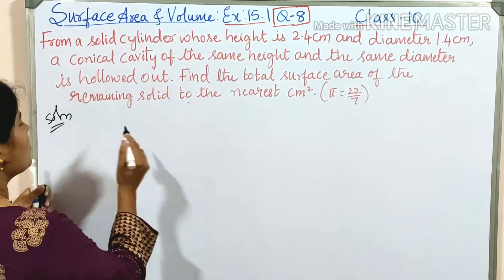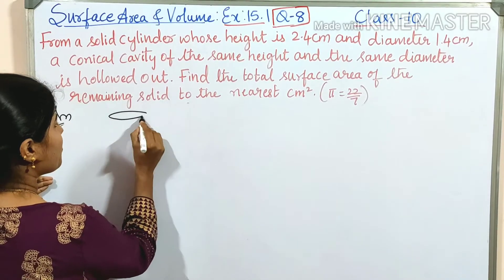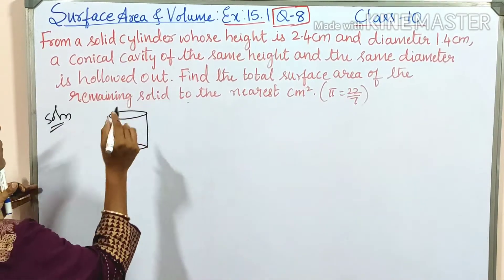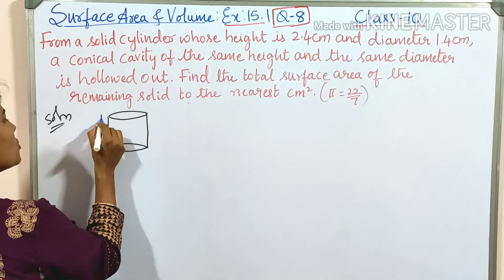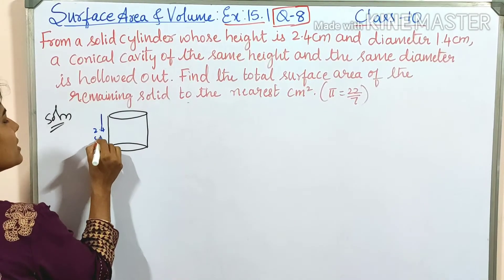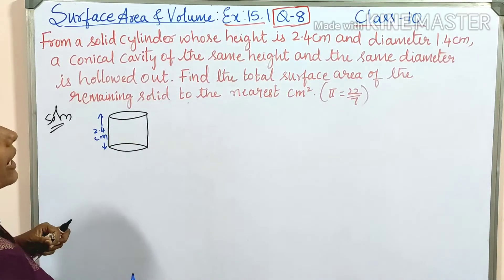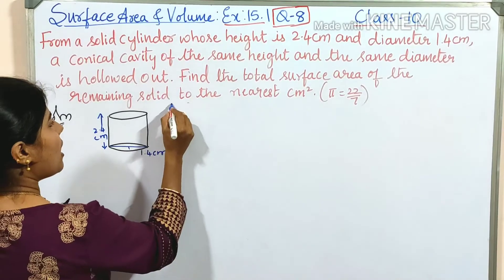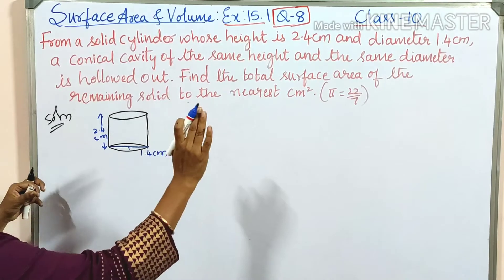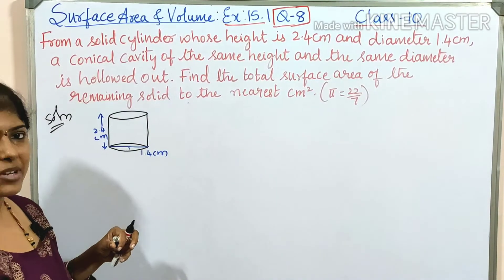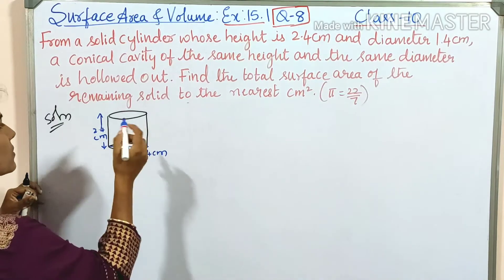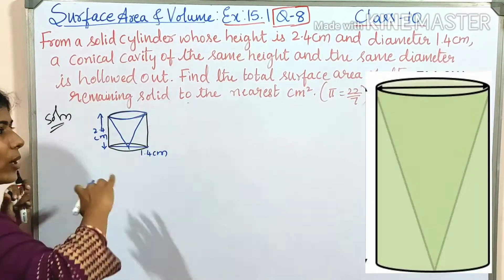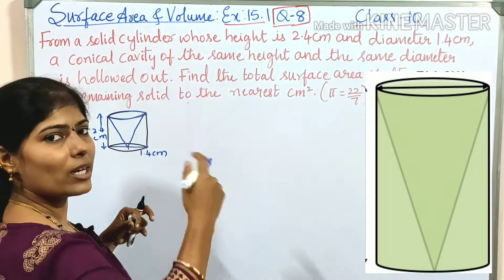Here is the cylinder with height 2.4 centimeters and total diameter 1.4 centimeters. A conical cavity of the same height and same diameter is hollowed out. Hollowed out means that part is cut out and removed.